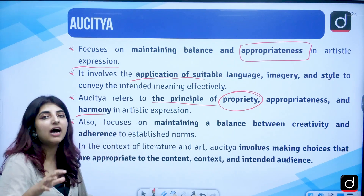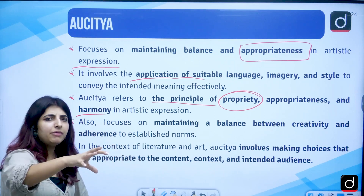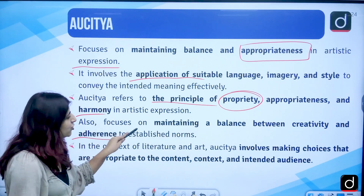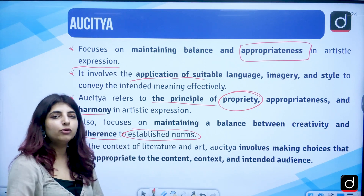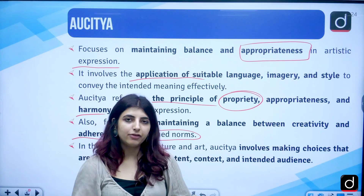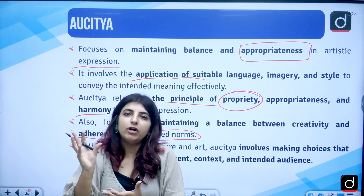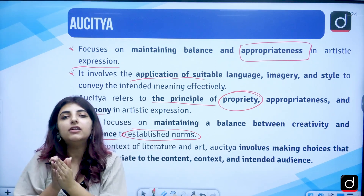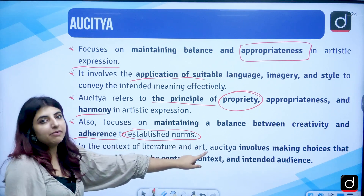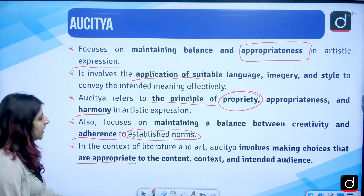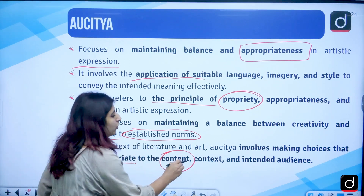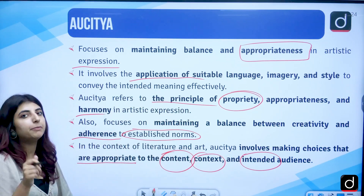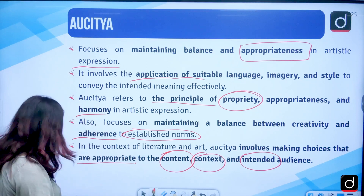Propriety, appropriateness, and harmony in artistic excellence — in any piece of poetry you are producing, you need to maintain a balance between creativity and adherence to established norms. It involves making choices appropriate to the content of your poem, the context, the background, and the intended audience.